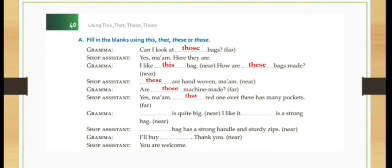Grandma. Dash is quite big. Now, near it is and is is written means it is singular. So what we will use? This. This is quite big. I like it. This is a strong bag. Again, it is near and one only. So this.